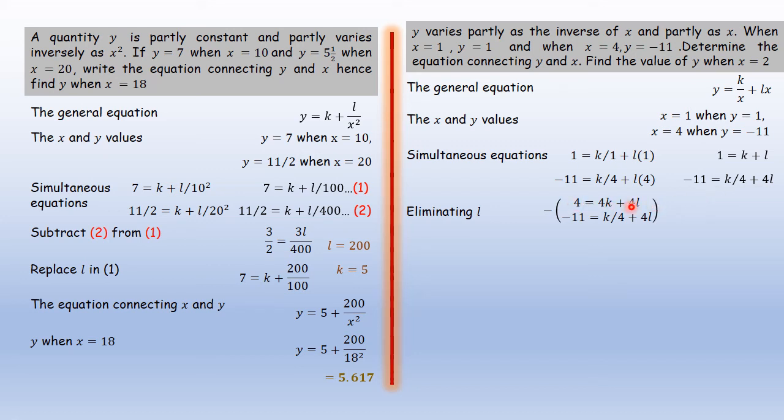This is the first equation, only that it has been multiplied by 4. And this is the second equation as it was. Just subtracting, we get 4 minus -11 is 15. And 4l minus 4l goes away. So we have 4k - k/4, which is 15k/4. Simplify that, you get k = 4.